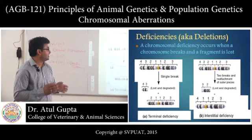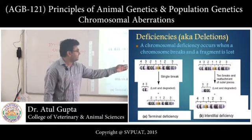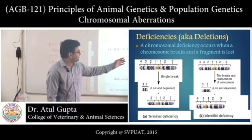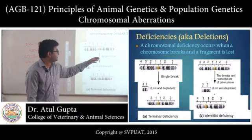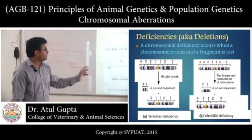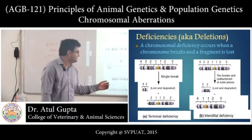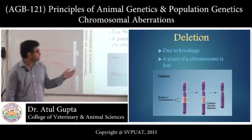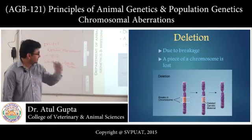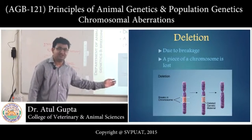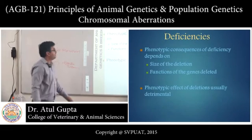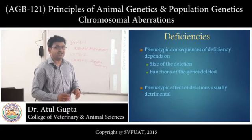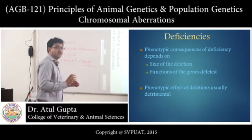In interstitial deficiency, the break occurs in an interstitial position, so two breaks are required. One break occurs between positions 1 and 2, and another between positions 3 and 4, so the portion containing segments 2 and 3 is lost. This is called interstitial deficiency or interstitial deletion. The phenotypic consequence of deficiency depends on the size of the deletion and the function of the genes on that deleted portion; deletion is usually detrimental.